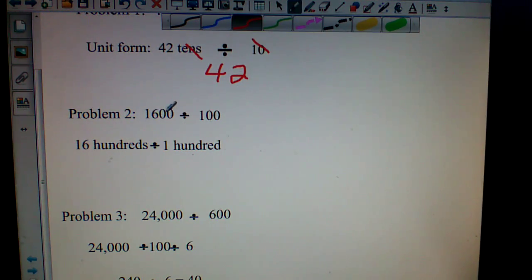Next we have 1600 divided by 100. Well, if we broke them up into hundreds, we would say 1600 is 16 hundreds, 100 is 1 hundred. Now we're dividing by the same unit, so the hundreds would kind of cancel each other out and we would be left with 16.